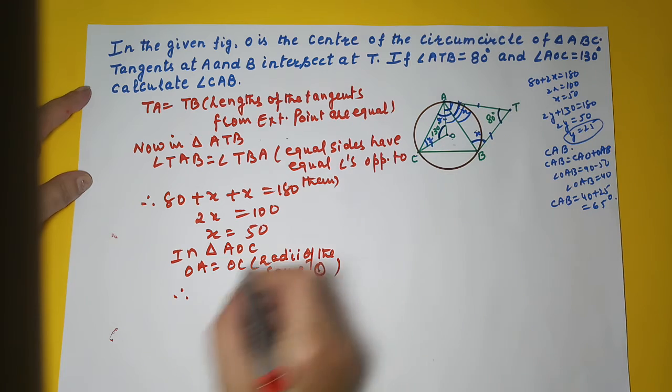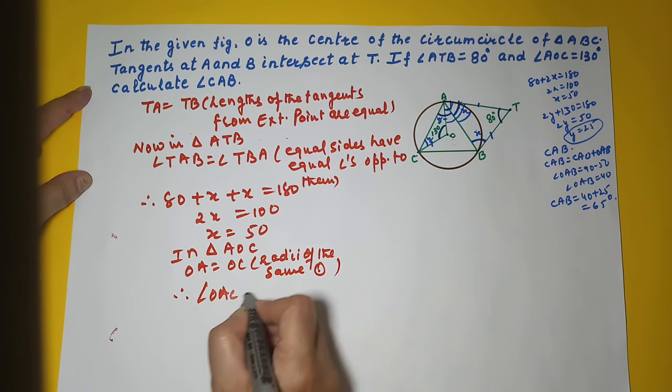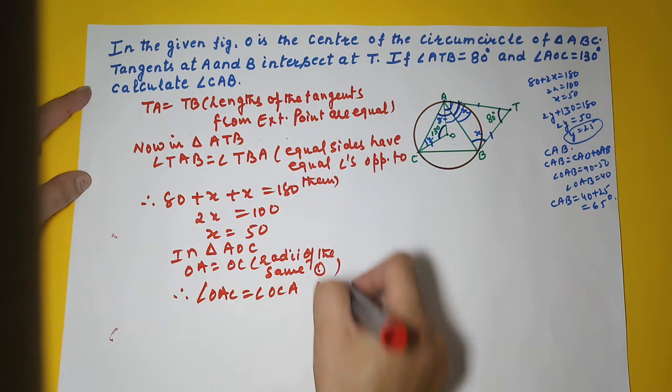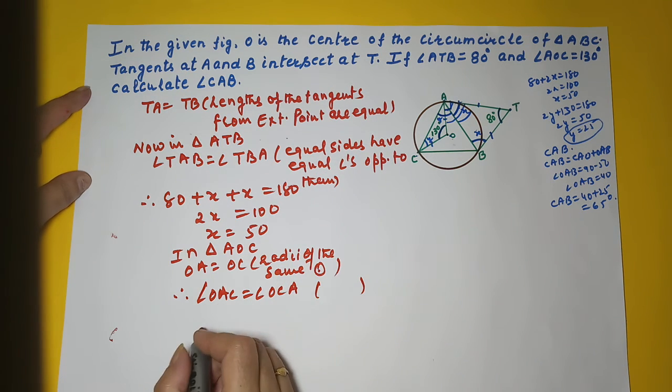Therefore, these two angles, angle OAC is equal to angle OCA. Same reason: equal sides have equal angles opposite to them.